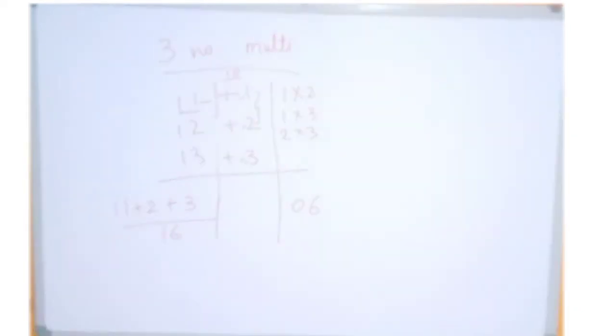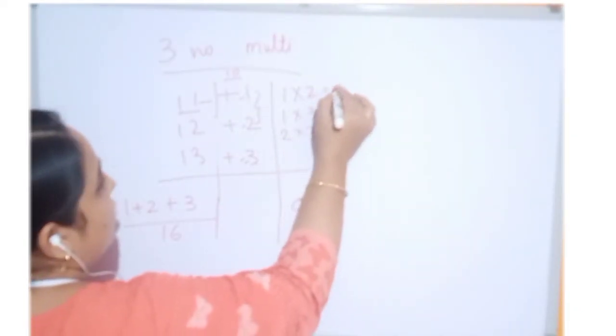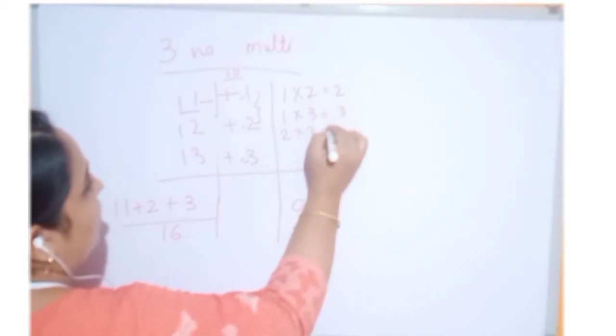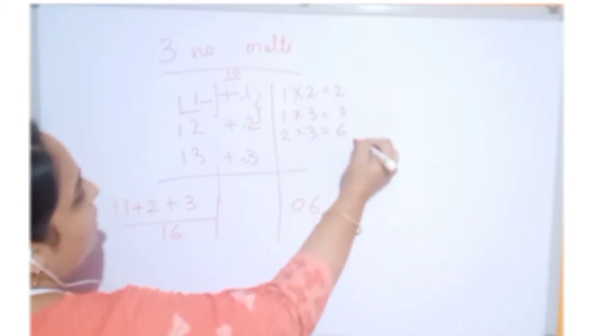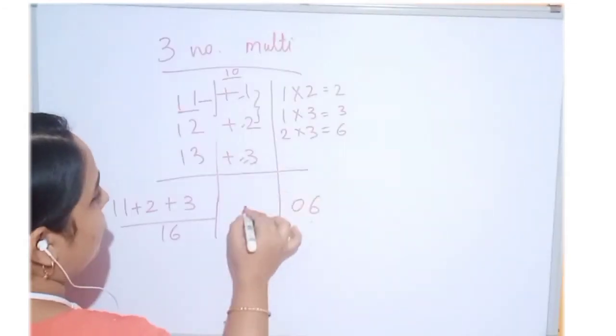Any more pairs we are getting? No. Only this much. Okay. So, 2 ones are 2, 3 ones are 3, 3 twos are 6. Addition of all these things will get 11.